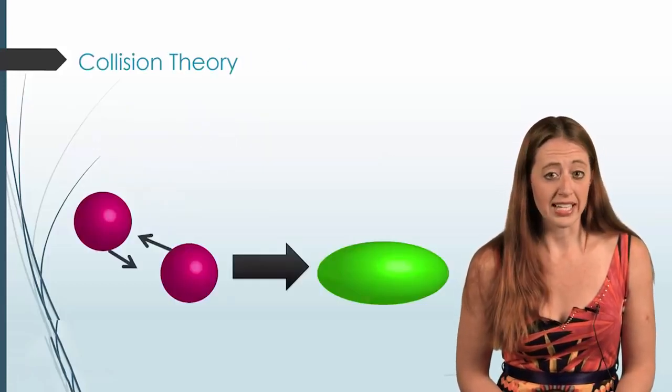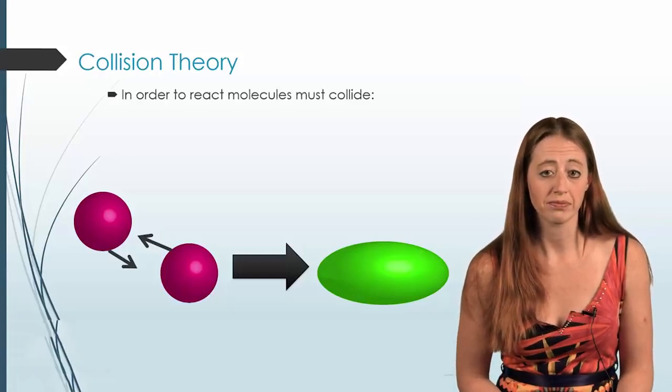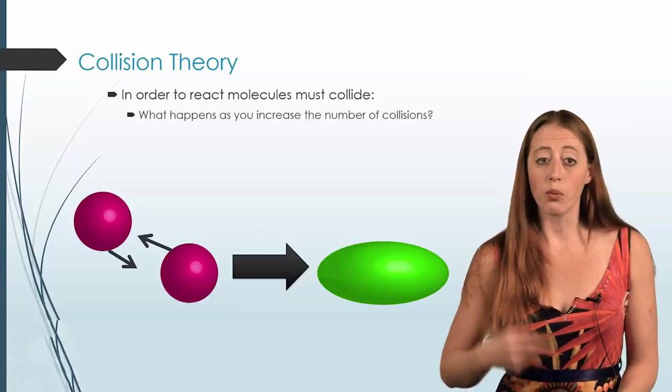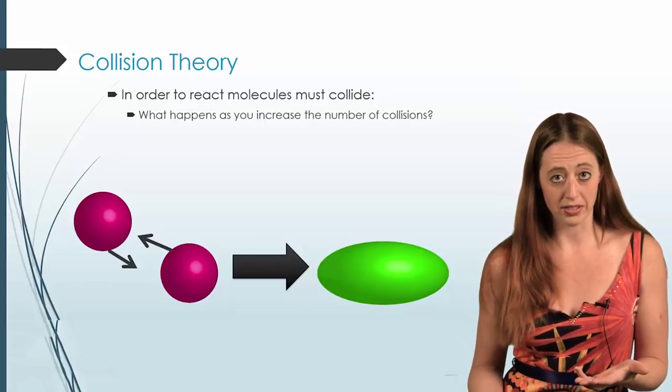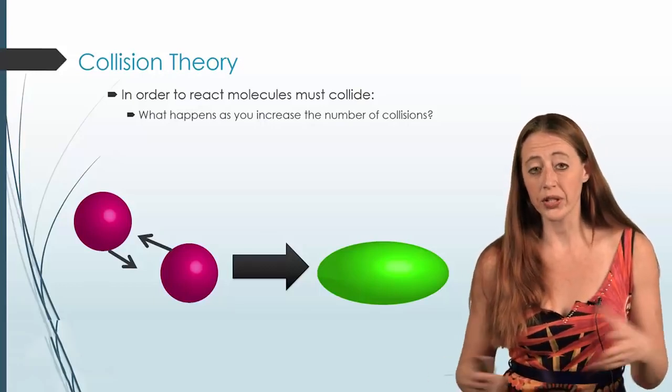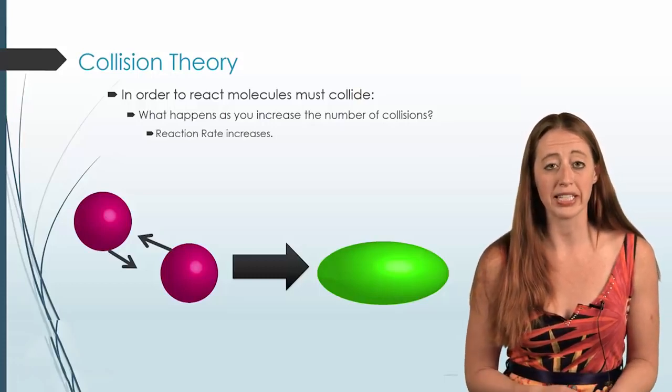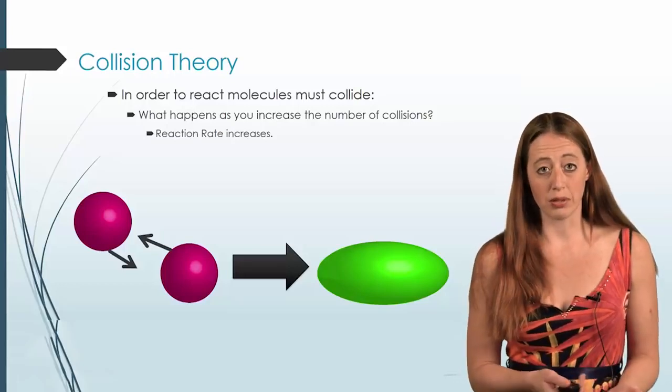So collision theory says that if we want molecules to react, they have to collide with each other. So let's think about this in terms of rates of reaction. What has to happen if we're going to increase the number of collisions? If we increase the number of collisions, our reaction rate is going to have to increase because they're going to be running into each other more often.